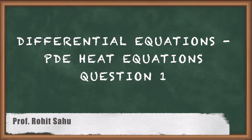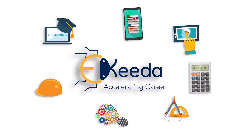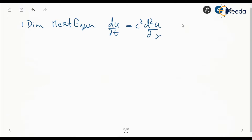Hello everyone. In this session we will see a question on the one-dimensional heat equation. So far we have seen that the one-dimensional heat equation is given by du/dt = c² · d²u/dx².